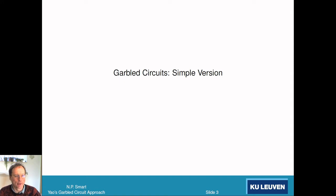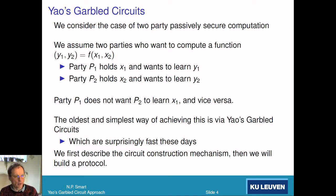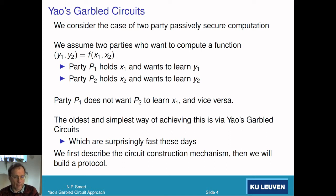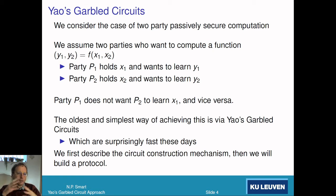First we're going to talk about garbled circuits. Before we talk about the protocol we've got to talk about the components. So let's focus on what a garbled circuit is. We're going to talk about a two-party protocol between Alice and Bob, P1 and P2, and they want to compute a function of P1's input x1 and P2's input x2, and they want to get different outputs. This is the oldest way of doing secure computation, and what's amazing is that these days it's actually really fast. If you see it for the first time you think it's never going to be practical, but with modern computers and all the tricks we can now do, this is a relatively fast way of doing secure computation.